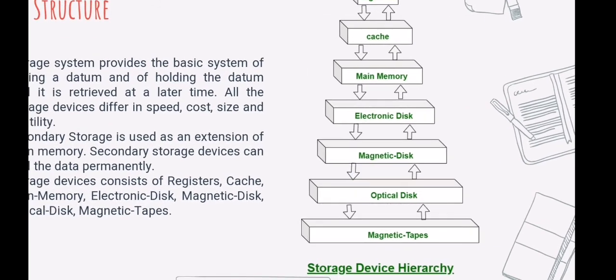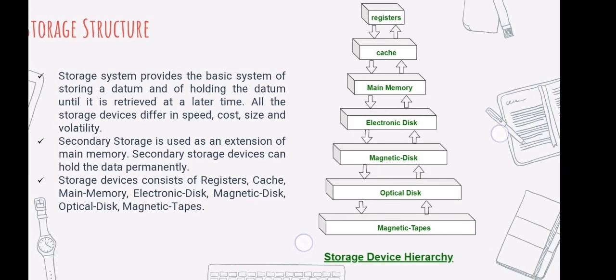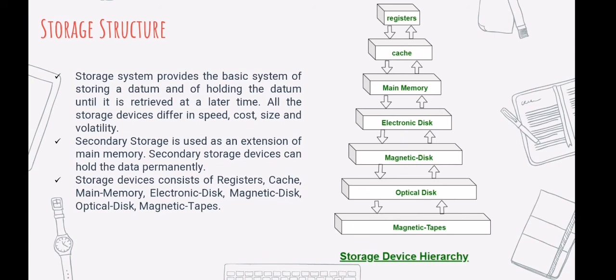In the storage device hierarchy, all storage devices are arranged according to speed and cost. The higher levels are expensive but fast. As we move down the hierarchy, the cost per bit generally decreases whereas the access time generally increases. Storage systems above the electronic disk are volatile, while those below are non-volatile.